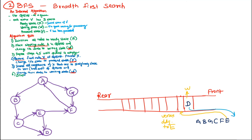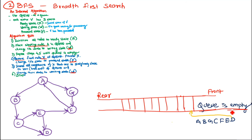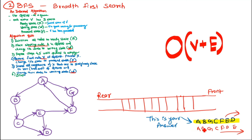Then D is taken out from the front of the queue, its state changes to process state. We look for adjacent nodes of D in the ready state, but all nodes are already processed. No other node in the graph is adjacent to D and in the ready state, so nothing is inserted. The queue becomes empty, and we stop all processing — that is the end of the breadth first search traversal.